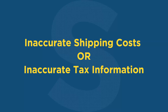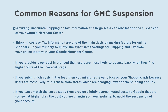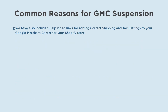Scenario 7: Google Merchant Center is suspended due to inaccurate shipping costs or inaccurate tax information. Providing inaccurate shipping or tax information at a large scale can also lead to suspension. You must try to mirror the exact same settings for shipping and tax from your online store in your Google Merchant Center. If you provide lower cost in the feed, users will bounce back when they find higher costs at checkout. If you can't match costs exactly, provide slightly overestimated costs. We have included help video links for adding correct shipping and tax settings in the description.